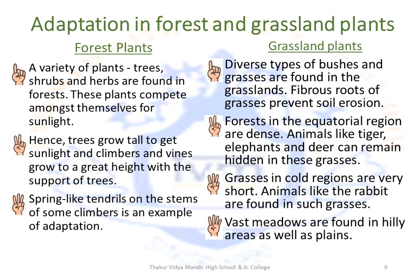Adaptations in forest and grassland plants — Forest plants: A variety of plants like trees, shrubs and herbs are found in forests. These plants compete amongst themselves for sunlight. Hence trees grow tall to get sunlight, and climbers and vines grow to a great height with the support of these trees. Spring-like tendrils on the stems of some climbers are an example of adaptation.